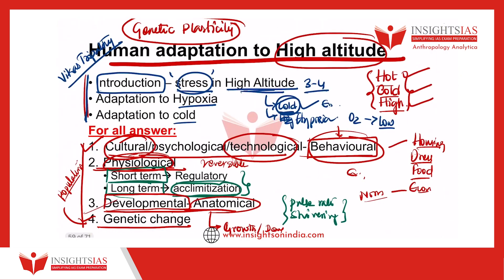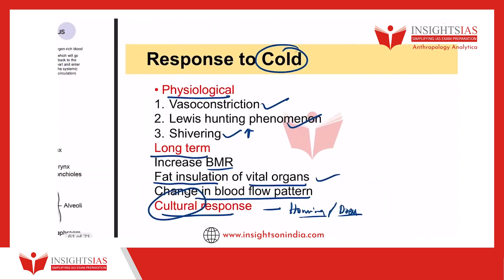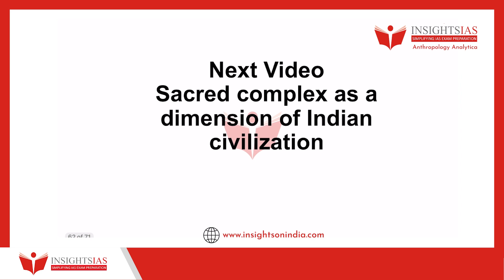One by one, you will have to write the various adaptations and changes that have happened in human populations and individuals in order to adapt to the stress of high altitude. This is the structure of the answer you need to write for the question on human adaptation to high altitude. The same framework can also be used for writing questions relating to hot and cold environments. I hope it was useful. In the next video, we shall discuss sacred complex as a dimension of Indian civilization. Thank you for watching.